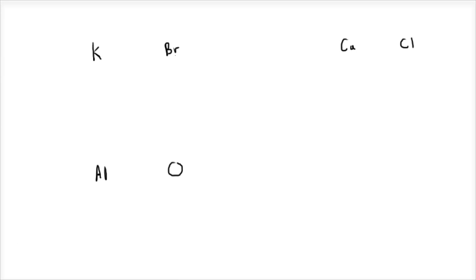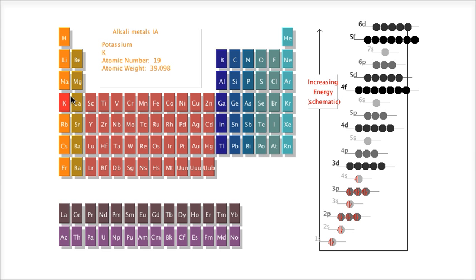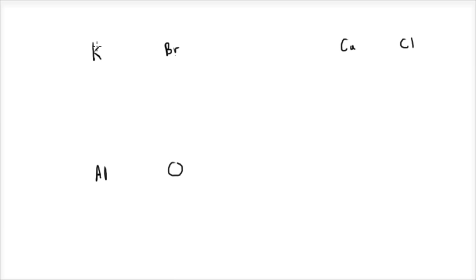So I have potassium and bromine here. We check out our periodic table. Potassium is in group 1A, so it's got a 4S1 valence electron and will tend to make a plus 1 ion. It's trying to give away that electron. Bromine is in group 7A, so it just wants to gain one electron into its 4P. What will happen is potassium will give up that electron to bromine, making both of them more stable. So you get potassium plus 1 and bromine minus 1.